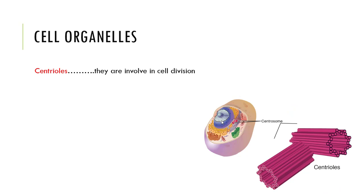The next one: centrioles. They are involved in cell division. As you can see in this diagram, two centrioles are present near the nucleus of an animal cell and they play an important role in cell division. These are centrioles, and they are collectively called centrosome.